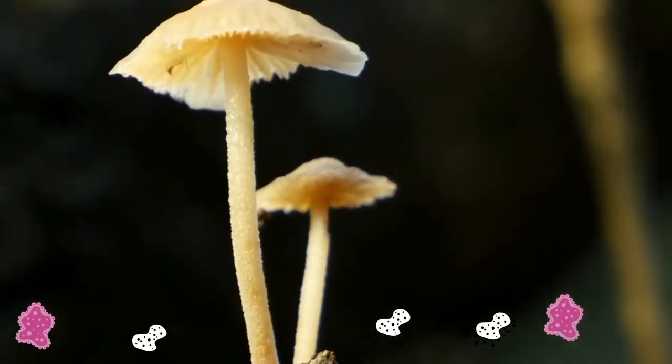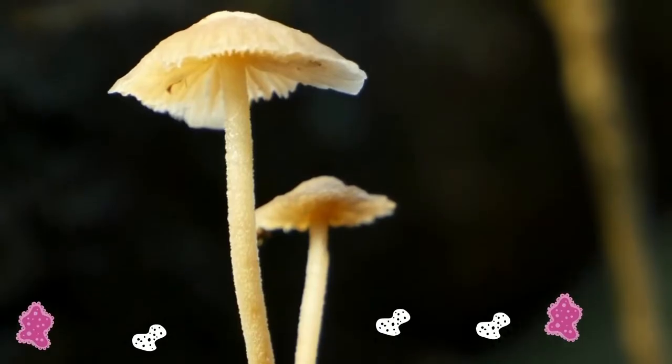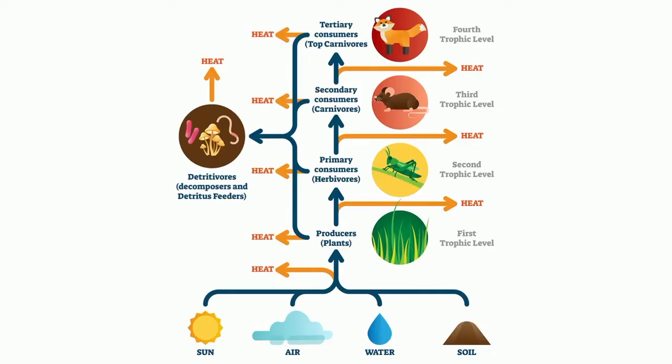Let's take a closer look at the food chain of a fox. At the base of the food chain lie the primary producers. The primary producers are autotrophs and are most often photosynthetic organisms such as grass. The organisms that eat the primary producers are called primary consumers. Primary consumers are usually herbivores, or plant eaters. In this example, it is the grasshopper.